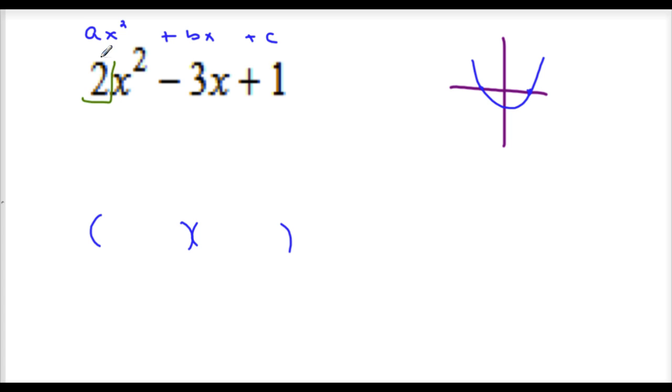What are factors of 2? 1 and 2. The leading coefficient being prime is a nice help because there's only two factors, 1 and itself. Factors of 1? 1 and 1.